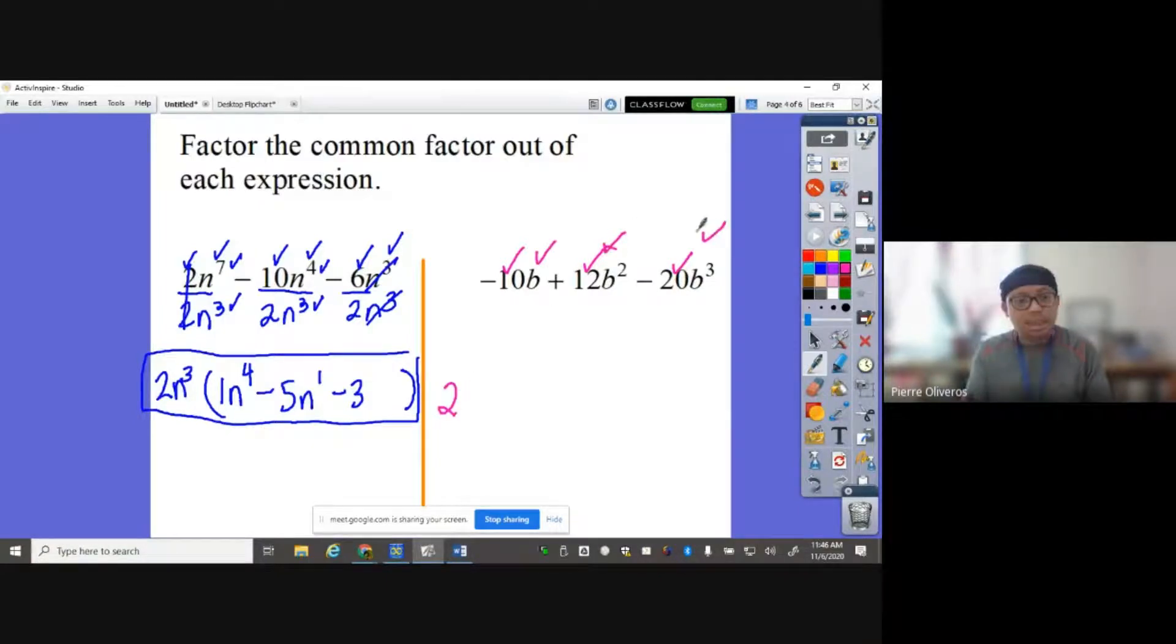Do all of them have Bs? Yes. What is the smallest B there? B1, B2, B3. B1. So draw parentheses here. Divide them all by the GCF: 2b, 2b, and 2b. Negative 10 divided by 2 is negative 5. Bs cancel out. 12 divided by 2 is 6. B2 divided by B, there's a B1 here. So subtract the 2 and the 1. That gives you B1, but I will leave it blank there. Negative 20 divided by 2 is negative 10. B cubed, B1 here is B squared. And that is the answer.